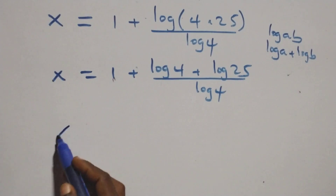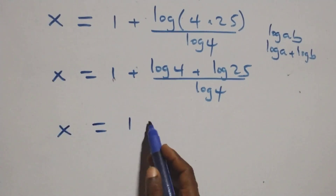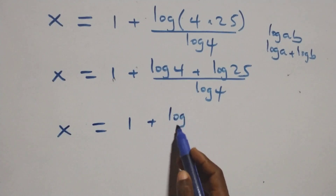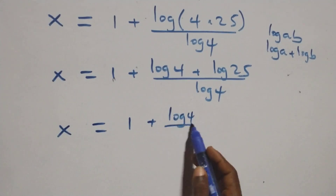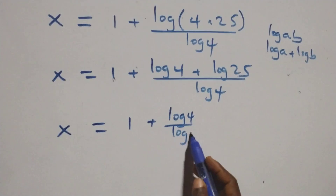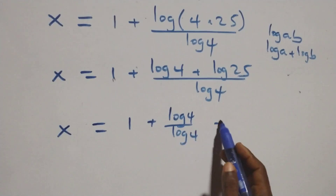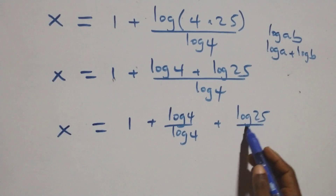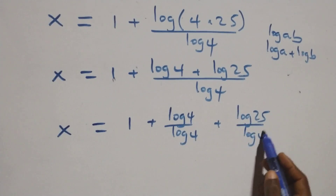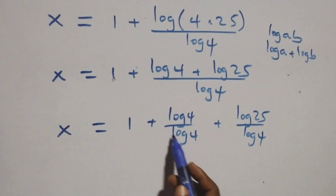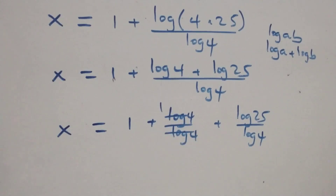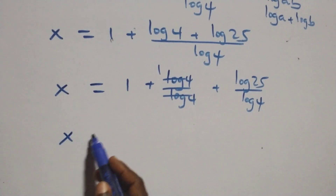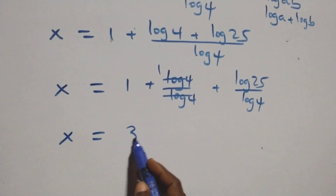Then here we have x equals 1 plus — we separate this into two fractions: log 4 over log 4, plus log 25 over log 4. Log 4 cancels with each other, so 1 is left here. This implies x equals 1 plus 1 plus log 25 over log 4, which gives us 2 plus log 25 over log 4.